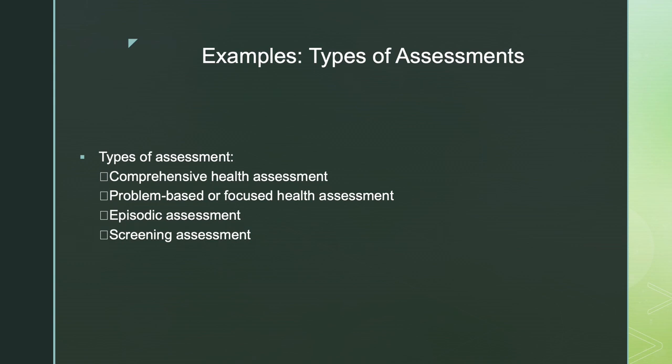An episodic assessment would be when a patient has a seizure or codes — I'm going to have to document it once, but very intensively. If it's a code, it's code charting. If it's a seizure, we use a seizure panel. If there are signs of a potential stroke with facial asymmetry, I would use an NIHSS assessment one time and then wait for a doctor's order to continue it every two hours.